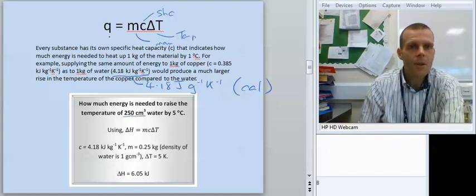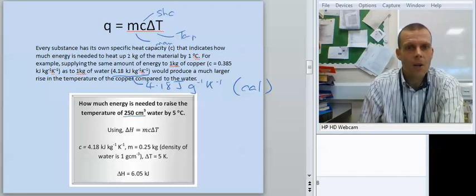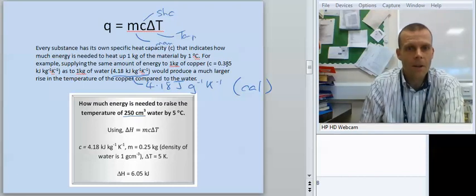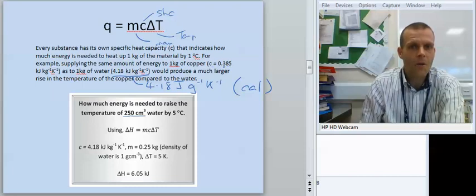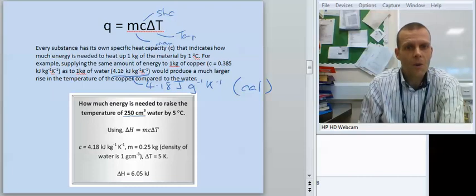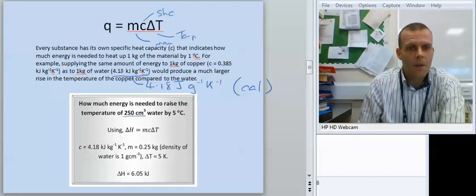So every substance will have a specific heat capacity. Something like copper, there you can see it's relatively low. So your copper saucepans get hot very quickly. But maybe the water inside them takes a little bit longer to boil because of the higher heat capacity.